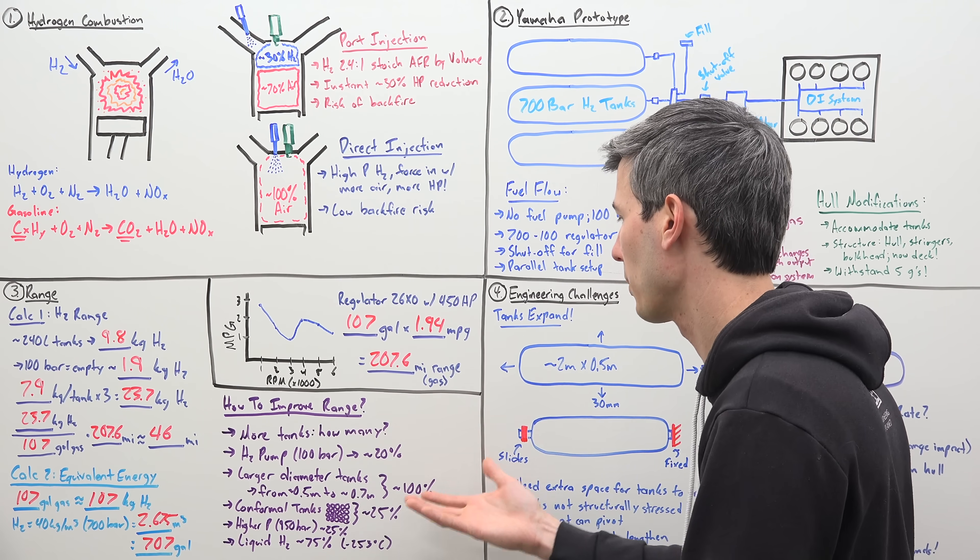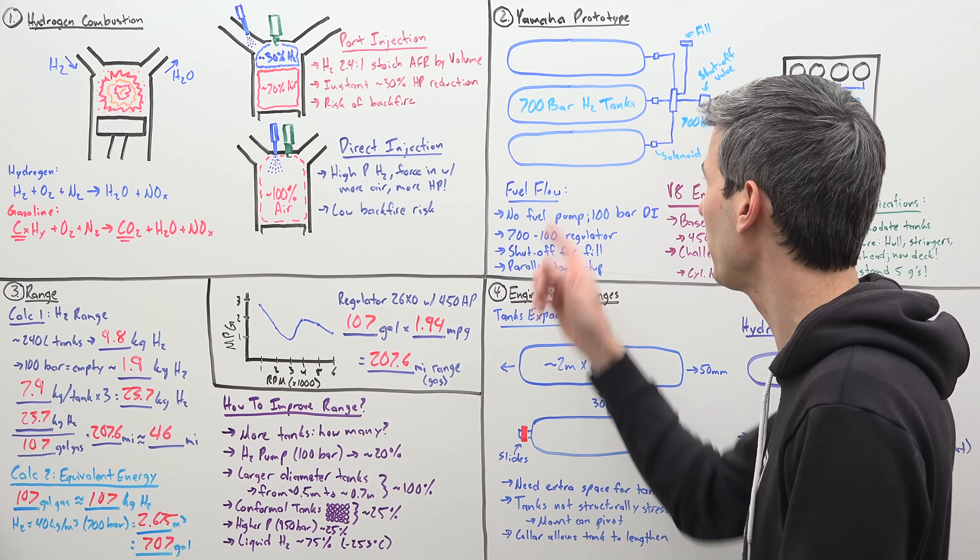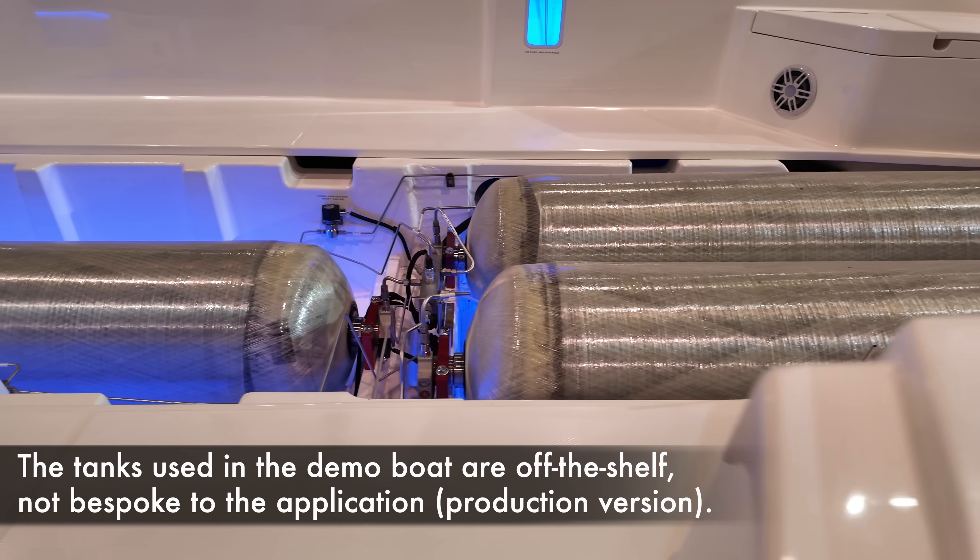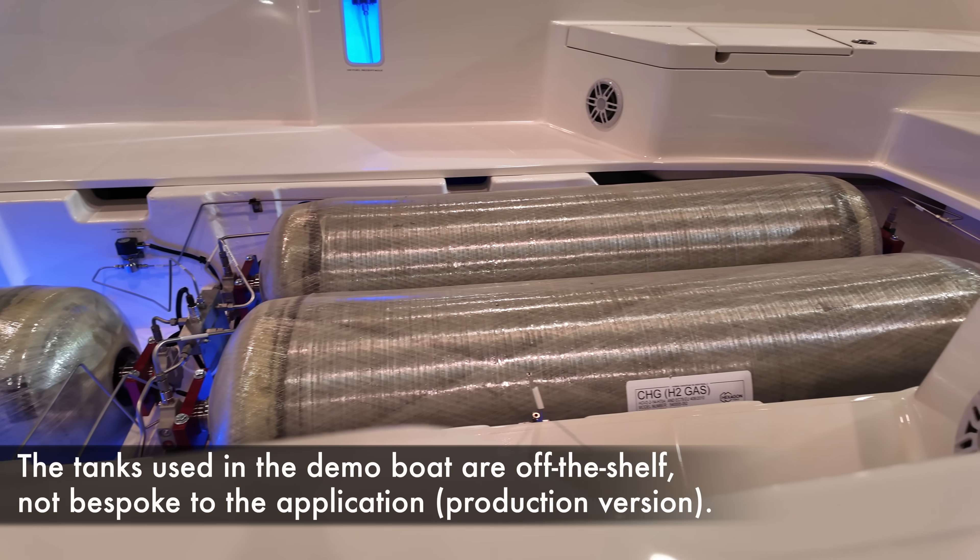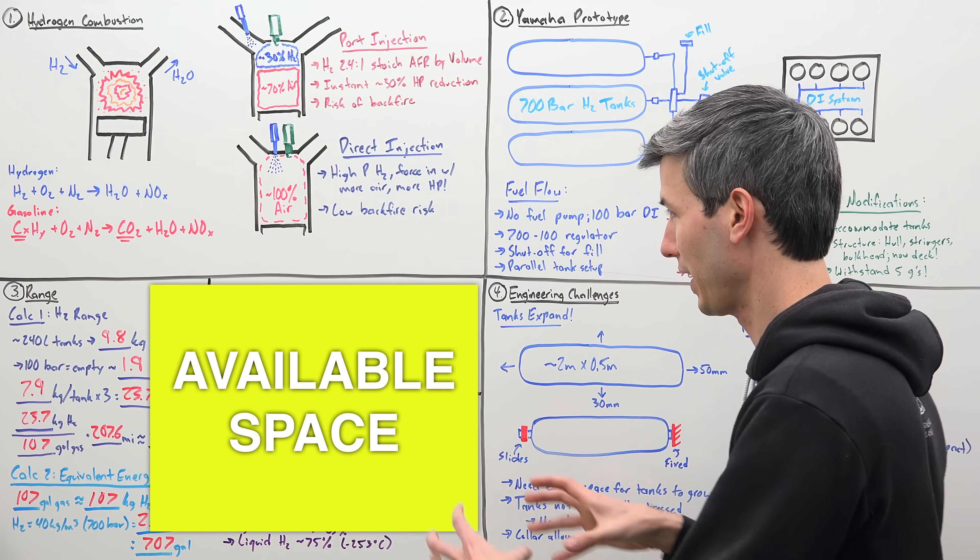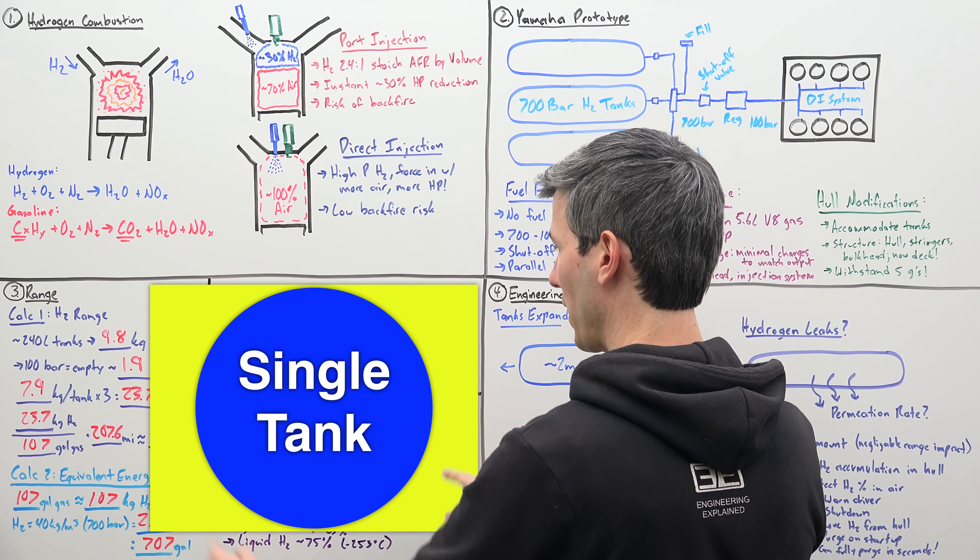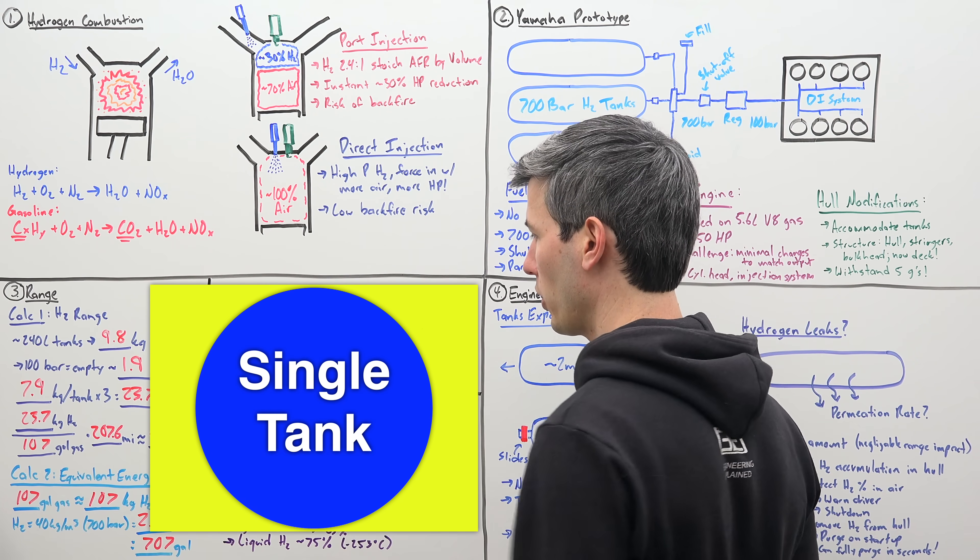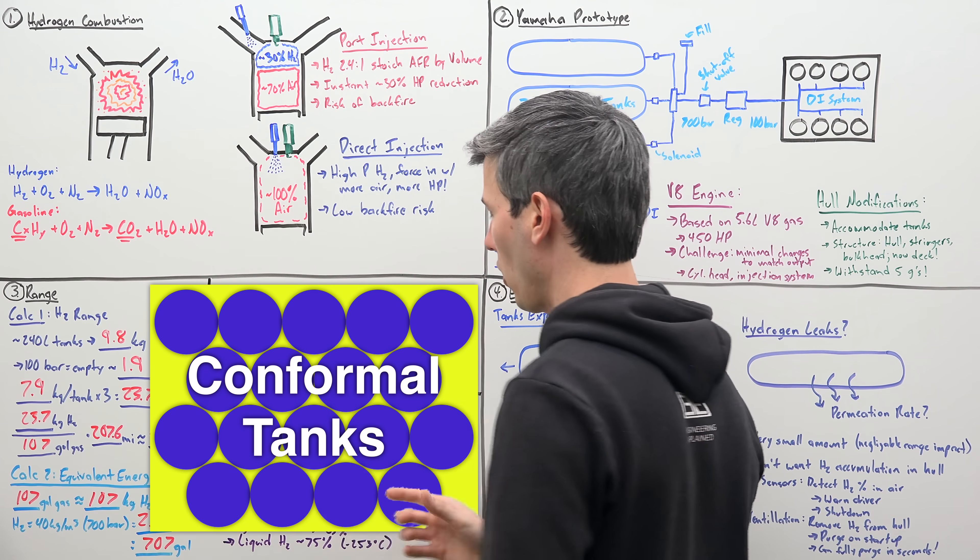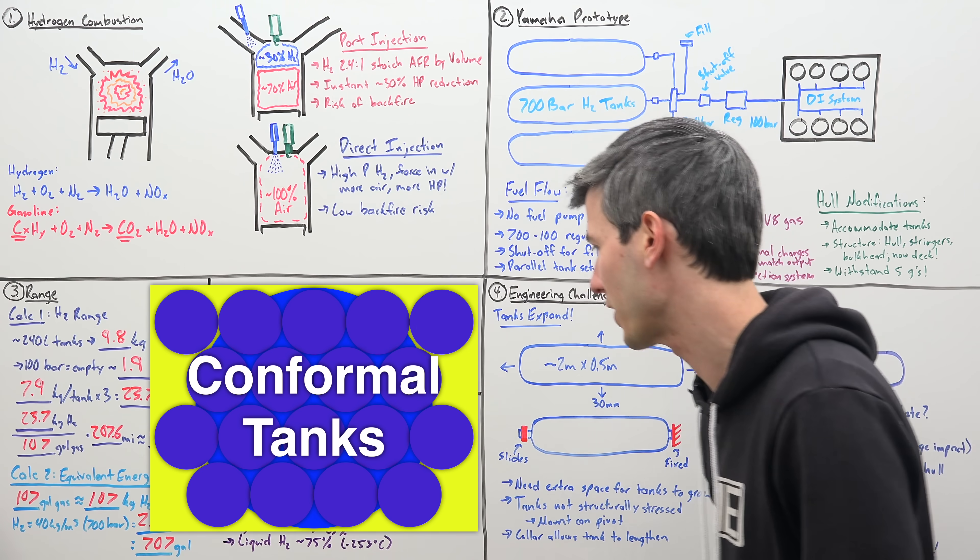If you went with larger diameter tanks, if you go from about half meter to about 0.7 meter, so a 200 millimeter increase in the diameter of these tanks, you can effectively double how much hydrogen you're storing. Of course, that's a bigger tank, you've got to put it somewhere, but an efficient way of doing it. Also, you could use conformal tanks, so this is a more space-efficient way of putting cylinders within a rectangular area. So conformal tanks take advantage of that and you use smaller cylinders all connected together to make use of that extra space, again giving you a benefit of about 25% increase in hydrogen.